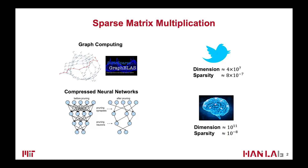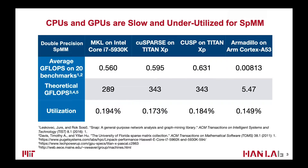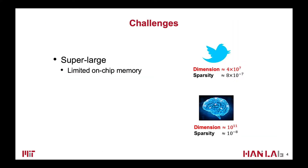Sparse matrix multiplication is an important operation in many applications, such as the graph BLAST library for graph computing, and the inference and training of compressed neural networks. However, traditional general-purpose platforms are not good at sparse operations. We found that on Intel CPU, ARM CPU, and NVIDIA GPU, the hardware utilization when doing double-precision sparse matrix multiplication is under 1%. That well motivates us to build specialized hardware for this important operation.